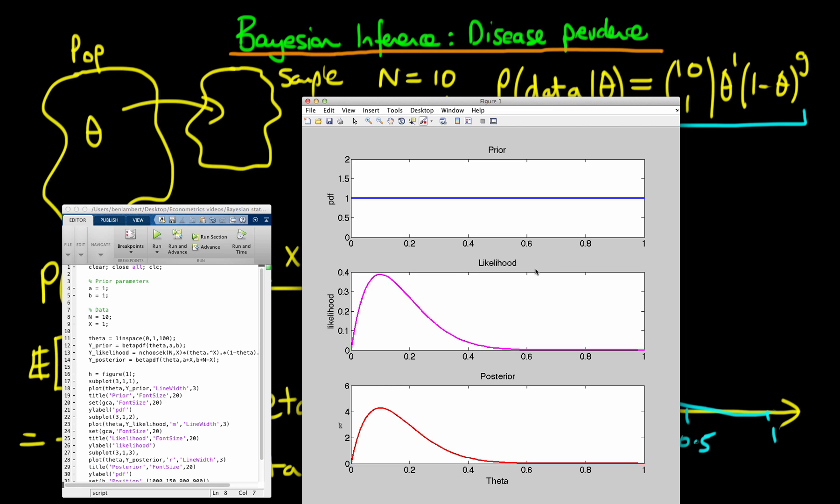And we see here that what I've done here is I've coded up the prior here, so the prior is just a uniform distribution. Then we've got the likelihood in magenta here, and then finally the posterior. And the reason I've actually done it in this sort of vertical form here is because we can see that because we know that the posterior is proportional to the prior times the likelihood, and because the prior is flat here, the posterior exactly mirrors what's going on in the likelihood.